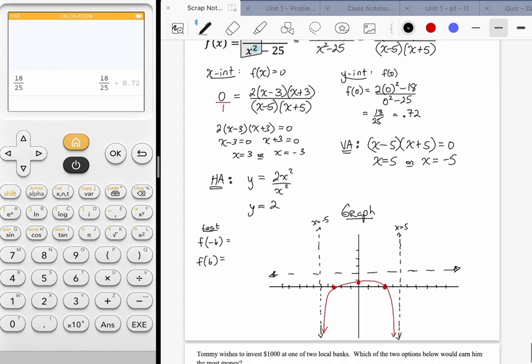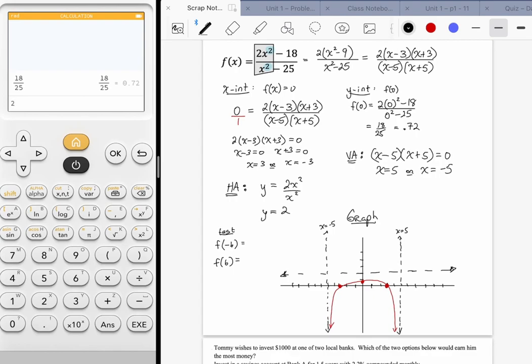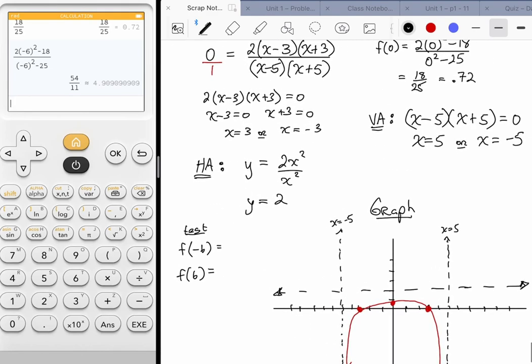Those go right into the function, the original form because nothing canceled. So 2 times (negative 6) squared minus 18, over (negative 6) squared minus 25. So I get a positive number that's bigger than 2. This is in the neighborhood of 4.91. So at 6, it's almost 5. So it's going to put me right about here. Since it has to go through this point and be asymptotic with this and this, it's got to look something like this.